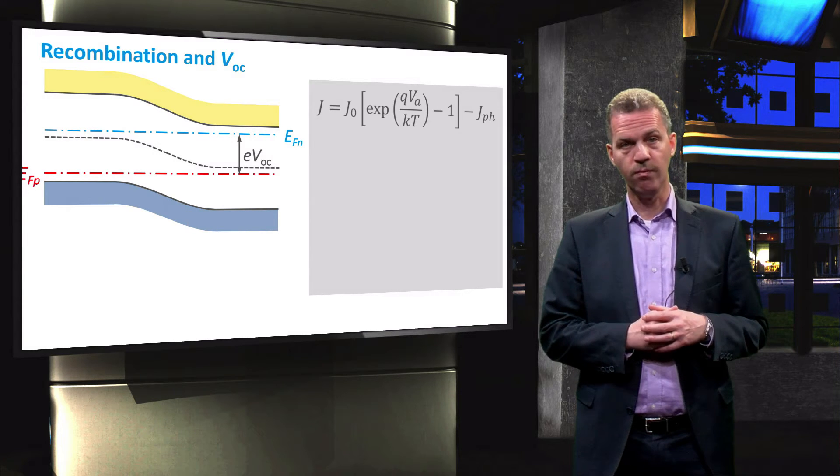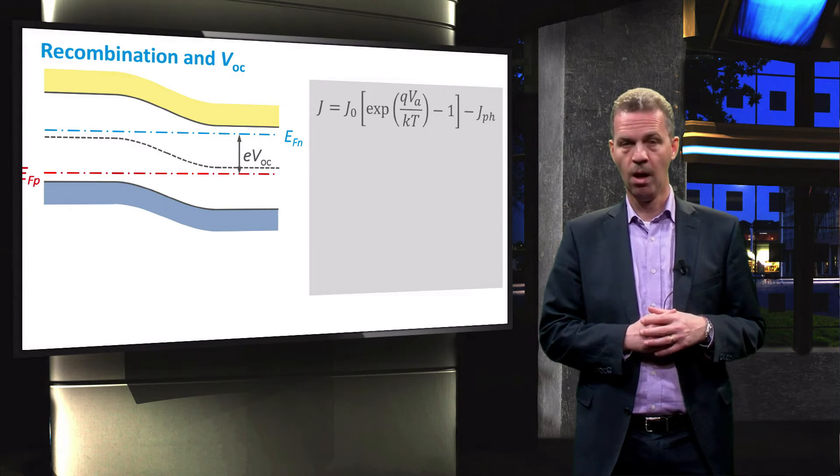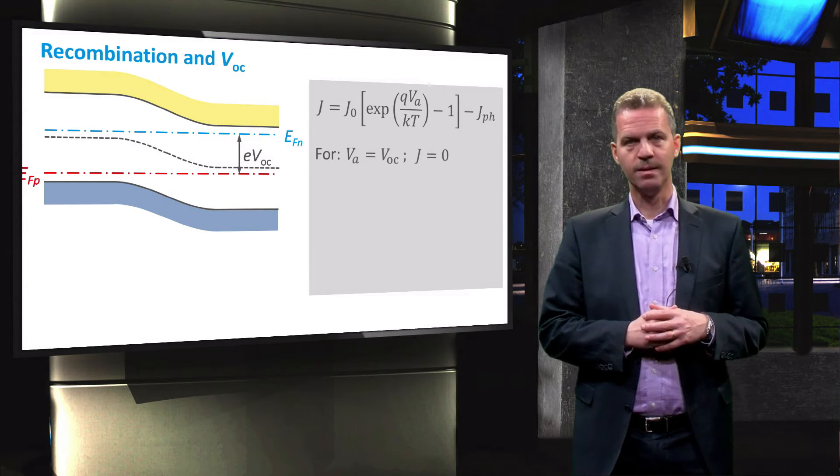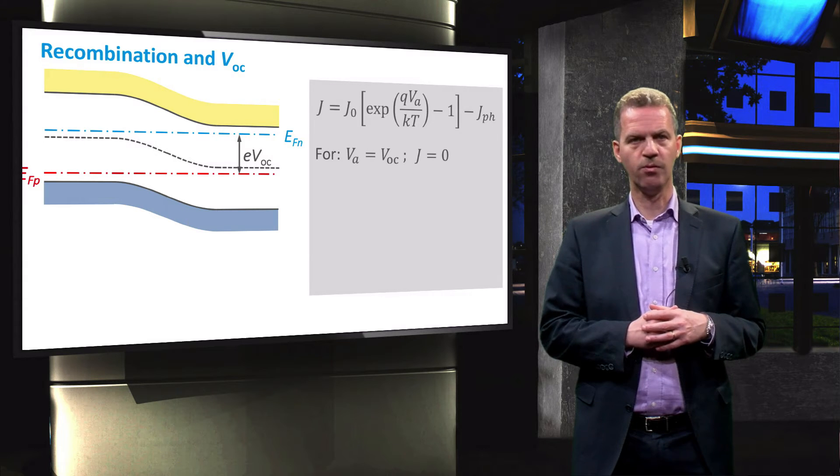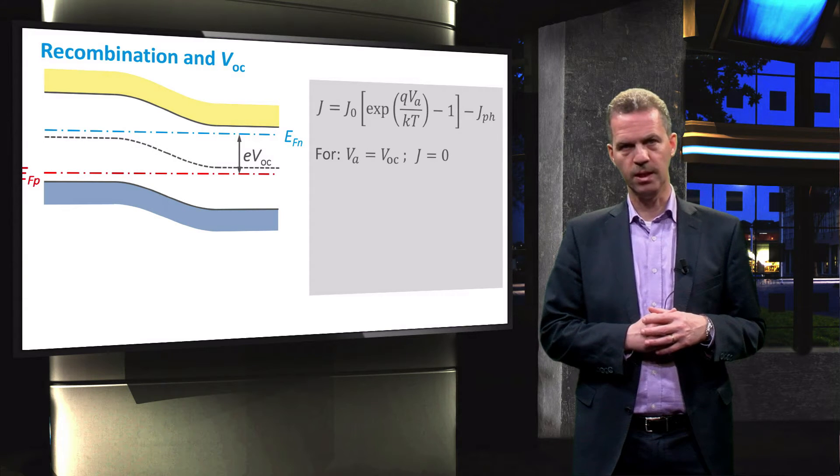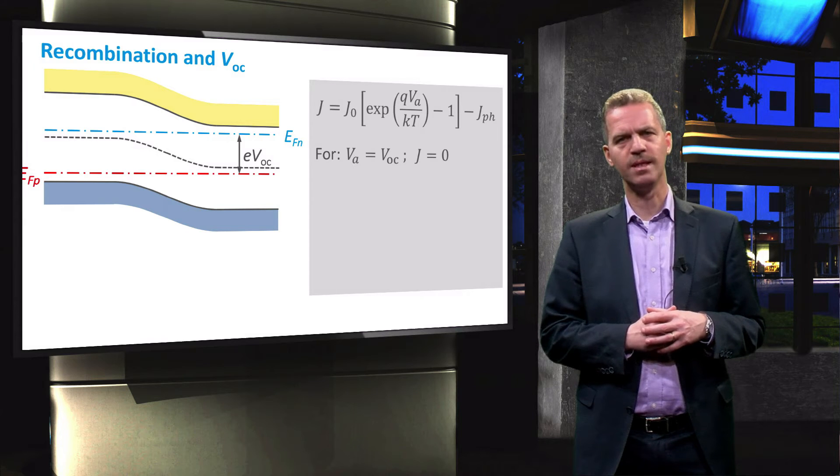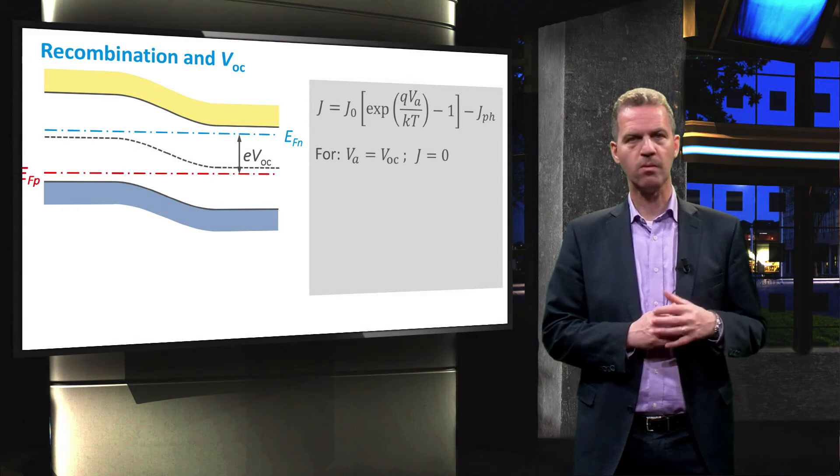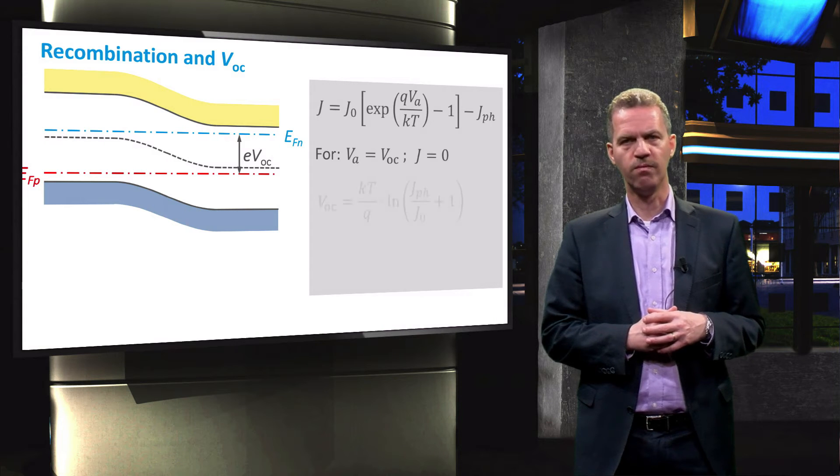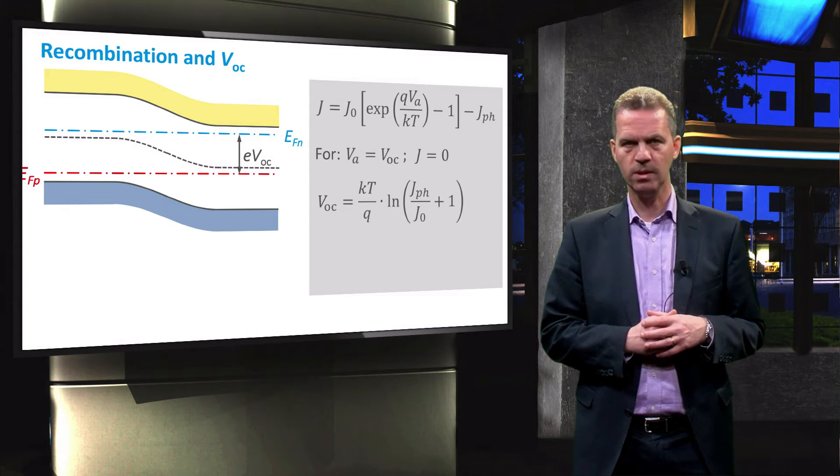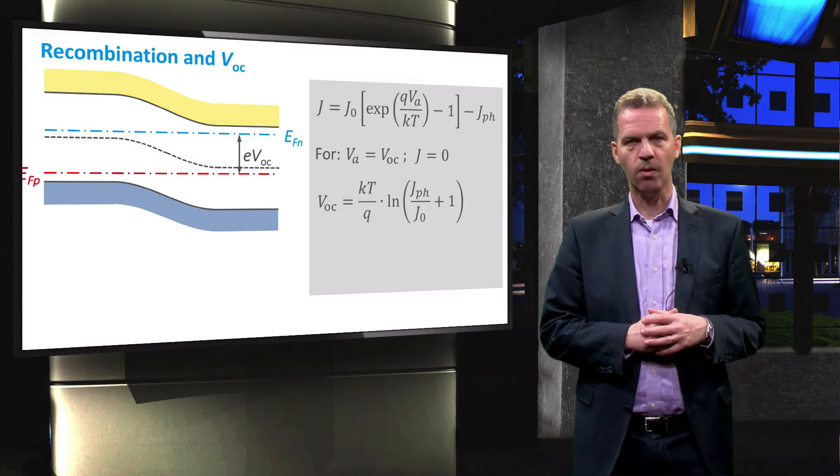The current voltage relationship for an illuminated solar cell is given by this expression. When we evaluate this expression for the applied voltage equal to the VOC and at which the external current density is zero, and subsequently rearrange it, we find the following equation for the VOC.